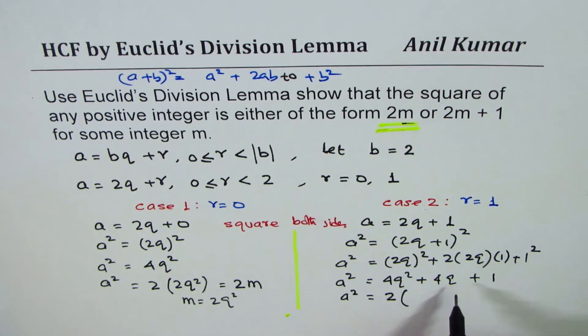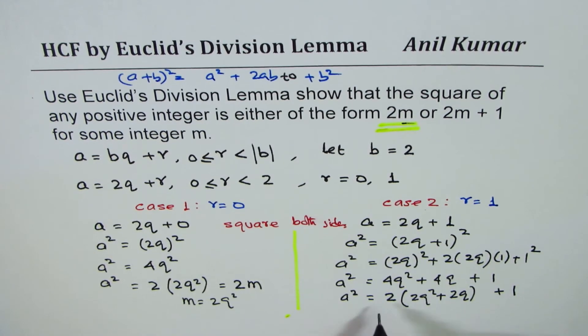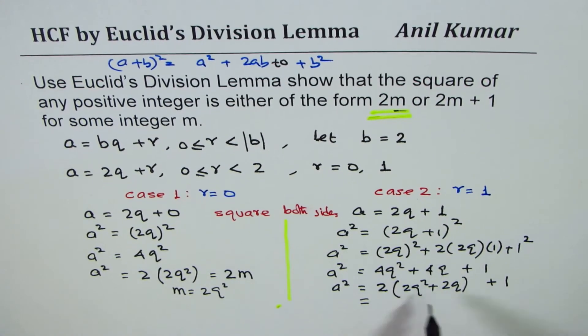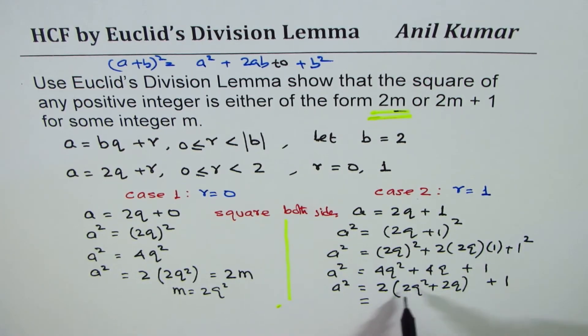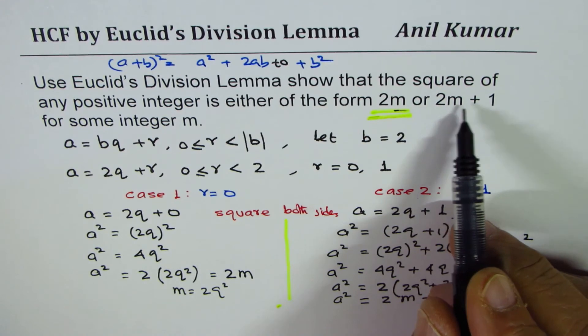Writing the rest inside a bracket, we get 2(2q² + 2q) + 1. Now we could write this as: let 2q² + 2q be any other integer, so we could say 2m + 1. So we have proven that the square of any number is twice another number plus 1.